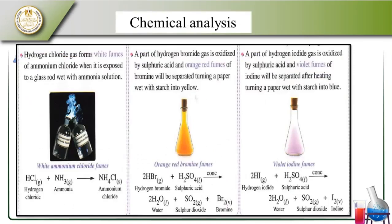Hydrogen chloride gas forms white fumes with ammonia, giving NH₄Cl. The hydrogen bromide gas is oxidized by sulfuric acid, giving an orange-red fuming with bromide — turning vapor with starch into yellow. HBr with sulfuric acid gives water, sulfur dioxide, and bromine. A part of hydrogen iodide gas is oxidized by sulfuric acid and violet fumes of iodine are separated after heating, turning starch into blue. HI with sulfuric acid gives water, sulfur dioxide, and iodine.